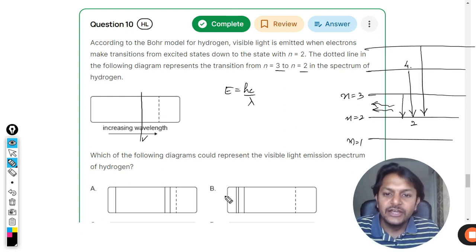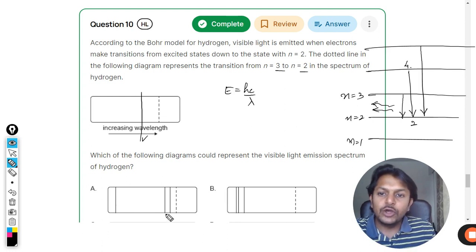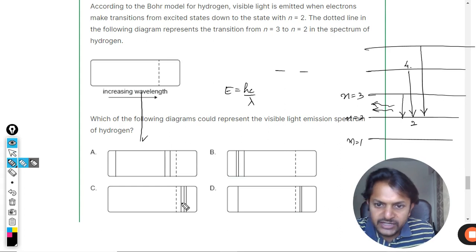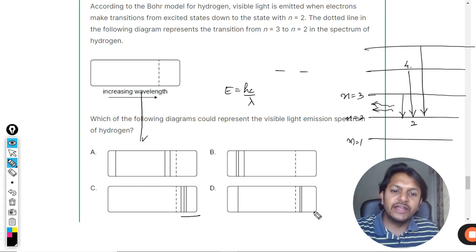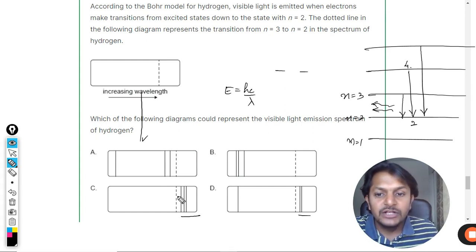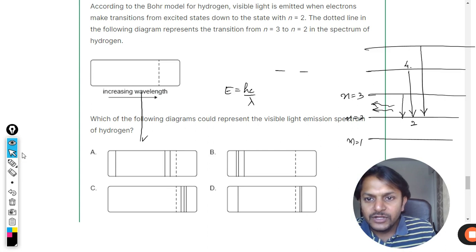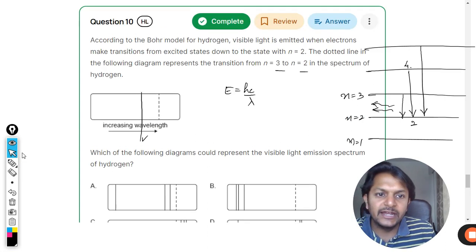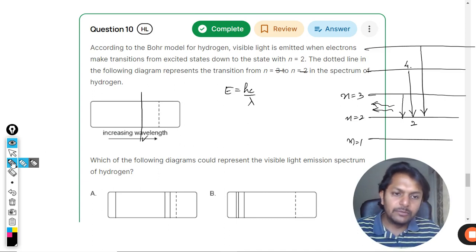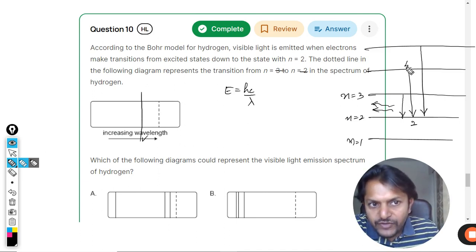First thing is you cannot go to the right hand side. In options C and D, you can clearly see these radiations are towards right, these lines are drawn towards right. But that is not possible, so C and D are definitely wrong. Our correct answer is hidden only in A and B.